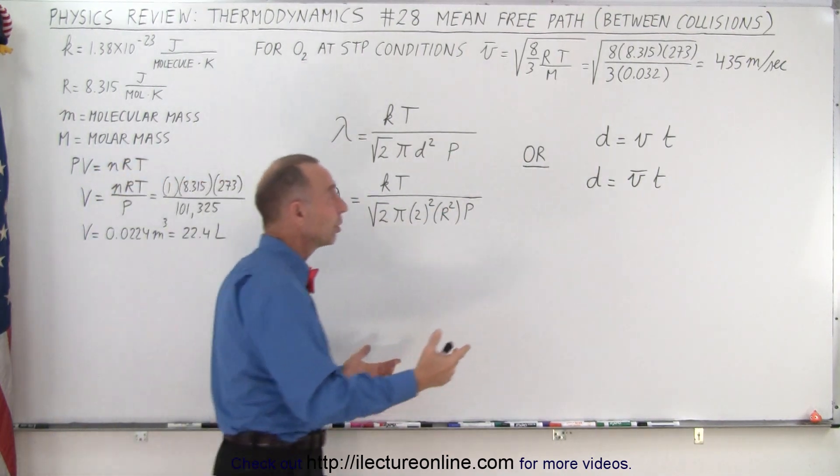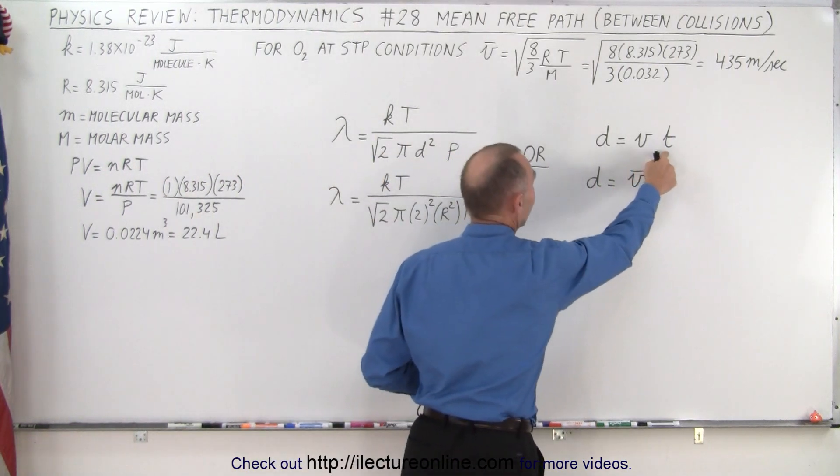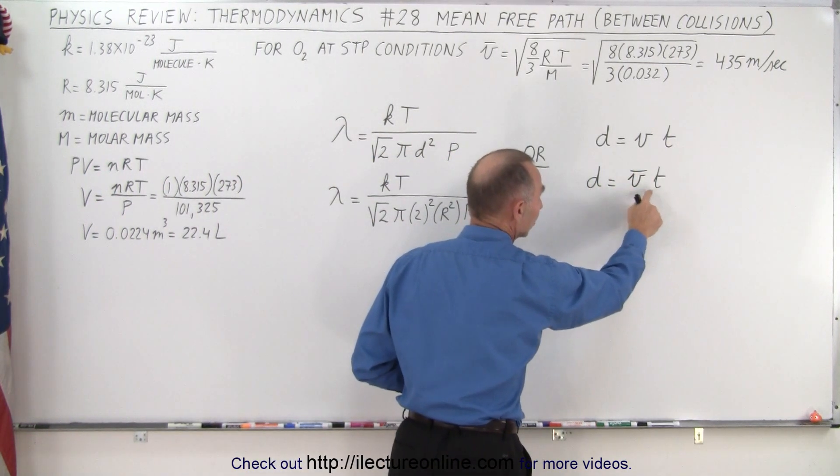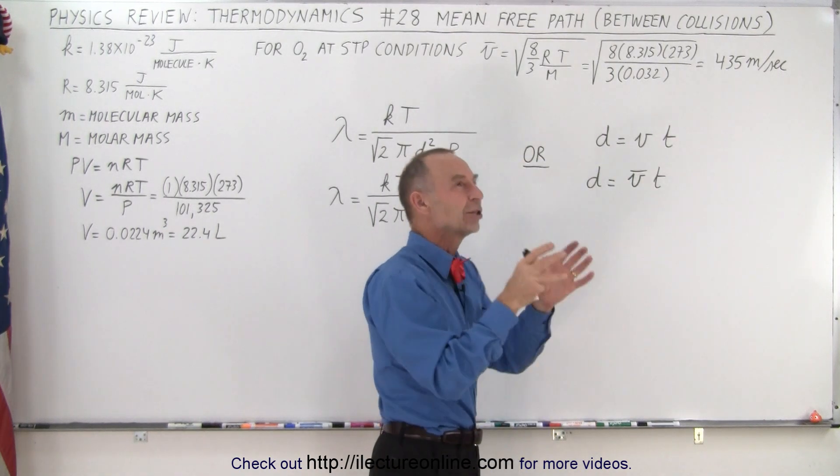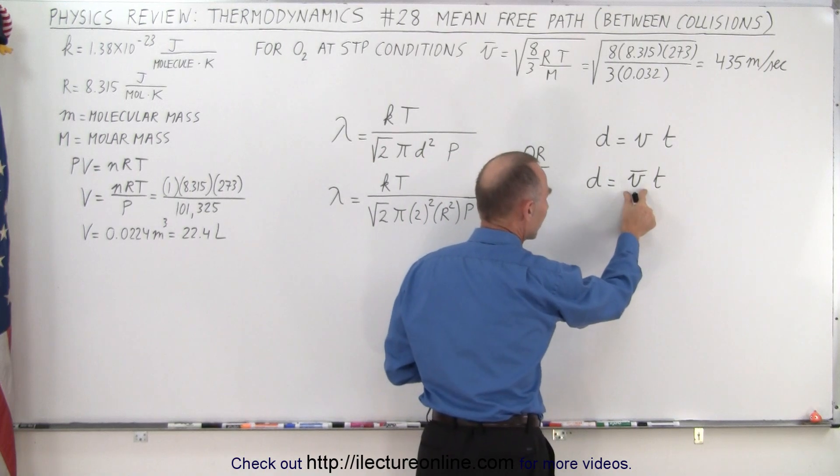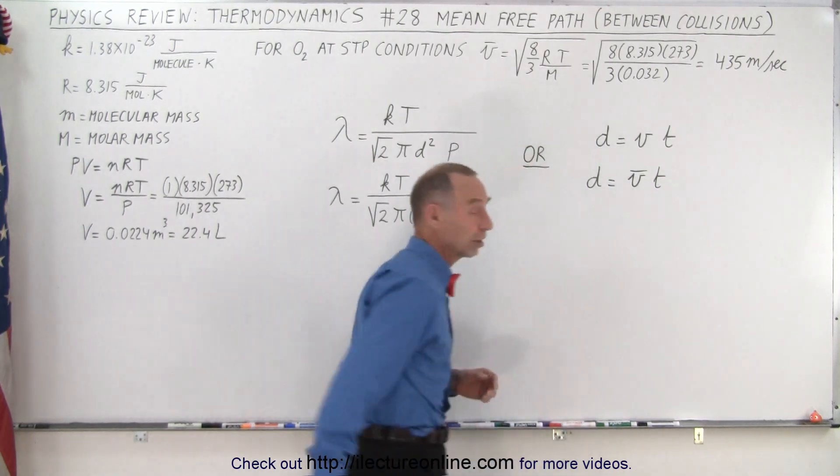Or we could simply use distance equals velocity times time. In this case, we're going to use the average velocity of the molecule. Oh, not time. That would be time between collisions. That's a better way to look at it. So the average velocity of the molecule times the time between collisions.